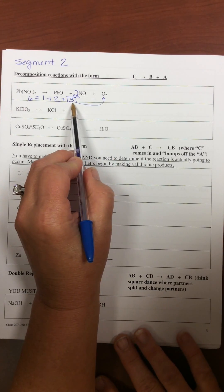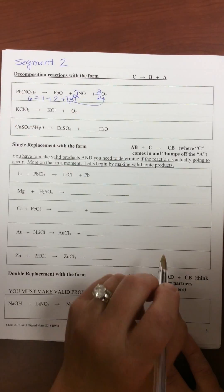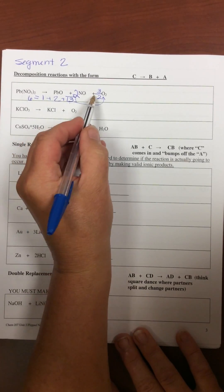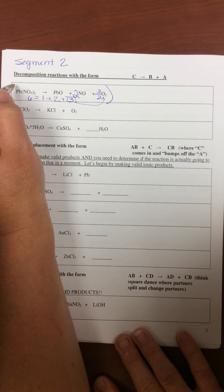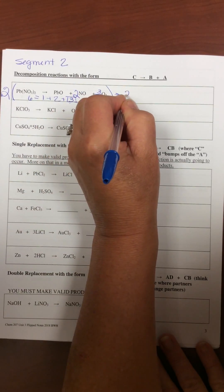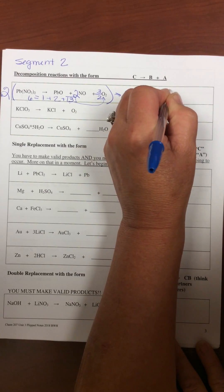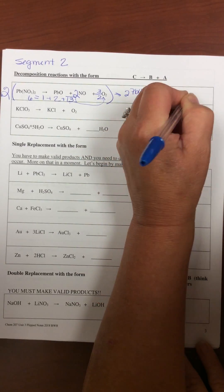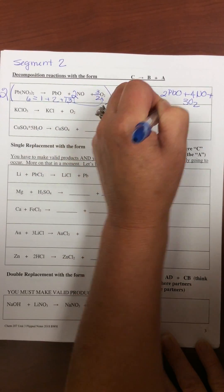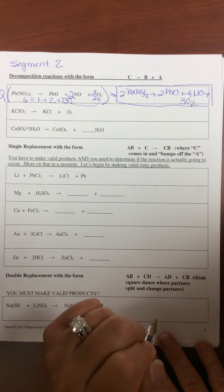Odd numbers always bother people, but the reality is this means we have three halves. Because three halves times two equals three. To get rid of the two in the denominator, multiply the whole thing by two. And that gives us 2Pb(NO3)2 yields 2PbO plus 4NO2 plus 3O2. And there is your final balanced decomposition equation.